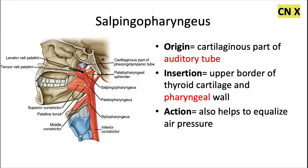Lastly, we have the salpingopharyngeus muscle. This is a really thin muscle that originates from the cartilaginous part of the auditory tube and inserts into the upper border of the thyroid cartilage and the lateral pharyngeal wall. "Salpingo" refers to the eustachian or auditory tube, and "pharyngeus" refers to where it inserts. The action is to help the tensor velli palatine in equalizing air pressure via action at the auditory tube.